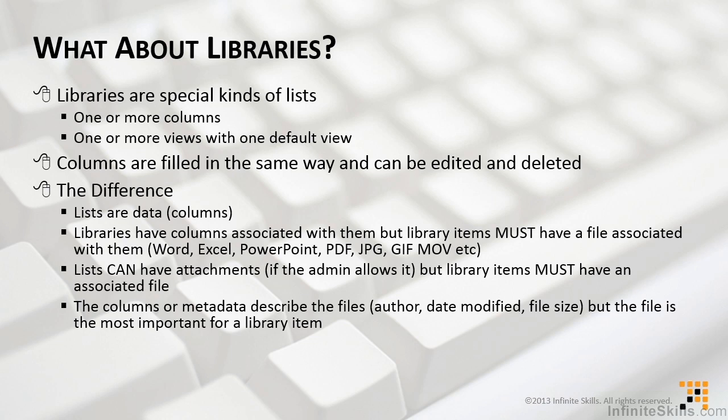Libraries, on the other hand, do have columns associated with them. But for library items, you must have a file — a physical file, like Word, Excel, PowerPoint, PDFs, JPEGs, GIFs, movies, and so forth. You must have a file associated with those items. Lists can have attachments if the administrator allows it, but library items must have an associated file. That is the core difference between lists and libraries.